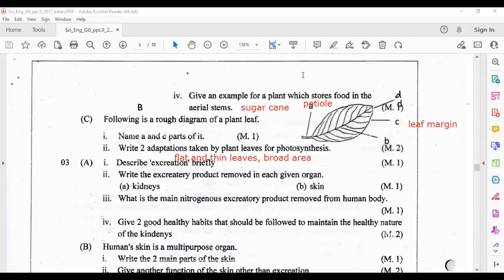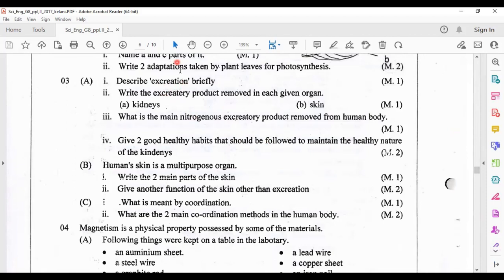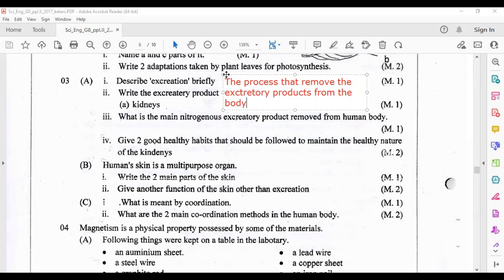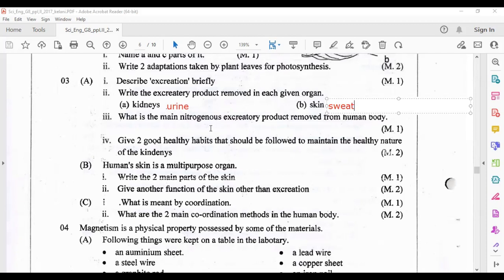Question number three: describe excretion briefly. Here the letters are E-X-C-R-E-T-I-O-N, excretion. I'm writing the definition here: the process that removes the excretory products from the body, that is excretion. Write the excretory product removed in each given organ: kidney - urine, skin - sweat. What is the main nitrogenous excretory product removed from human body? That is urea.